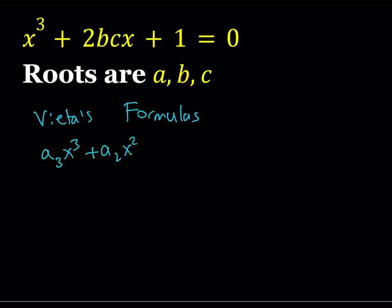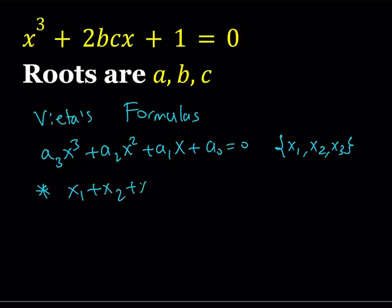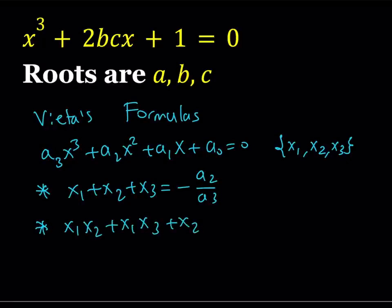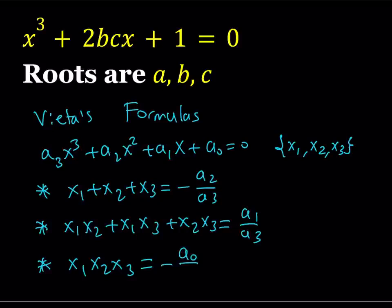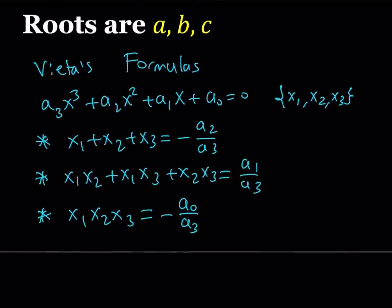Suppose we have a cubic equation with roots x1, x2, and x3. By Vieta's formulas, the sum of the roots x1 plus x2 plus x3 equals negative a2 over a3. The two-way products equal a1 over a3. And the product of the roots x1 times x2 times x3 equals negative a0 over a3.